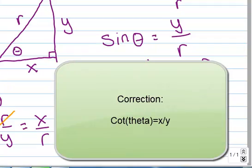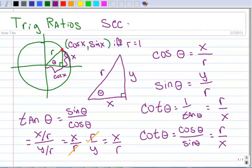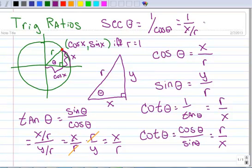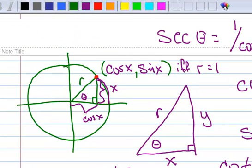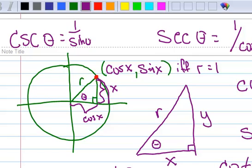Let's squeeze in secant. Secant, you will recall, is the reciprocal of the cosine, so that's going to be 1 over x over r, which is r over x. And cosecant — the cosecant of theta is 1 over the sine, just like we did for the secant, and you end up with r over y. These are what is called the trig ratios.